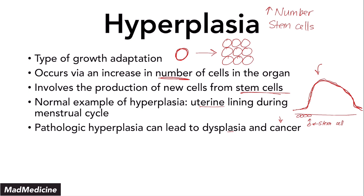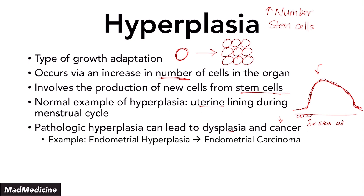One key example of pathologic hyperplasia would be endometrial hyperplasia. Endometrial hyperplasia usually occurs after a woman finishes menopause — when they're postmenopausal and they have unopposed estrogen stimulating the endometrial lining to grow. You end up getting endometrial hyperplasia, and this is a pathologic hyperplastic condition because if it is left untreated, you will progress to endometrial carcinoma, also known as endometrial cancer.